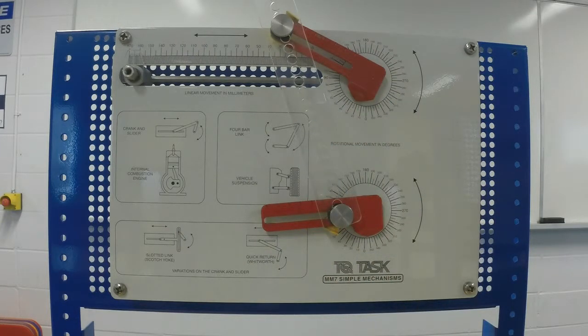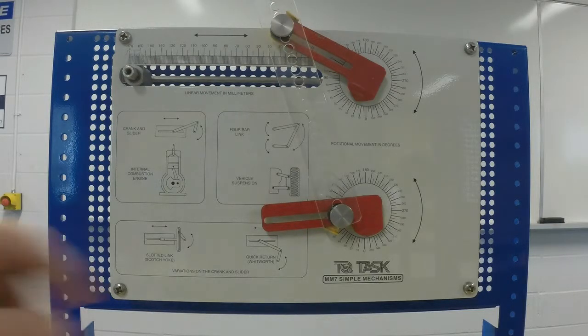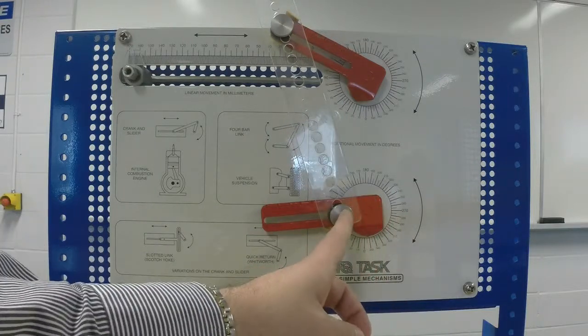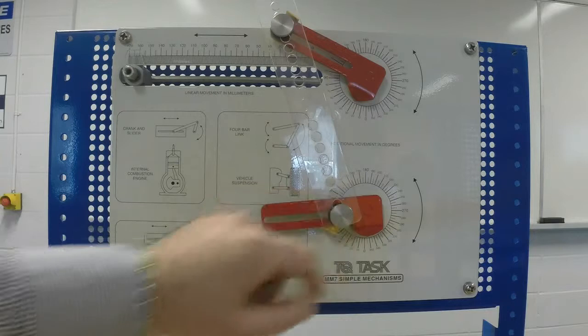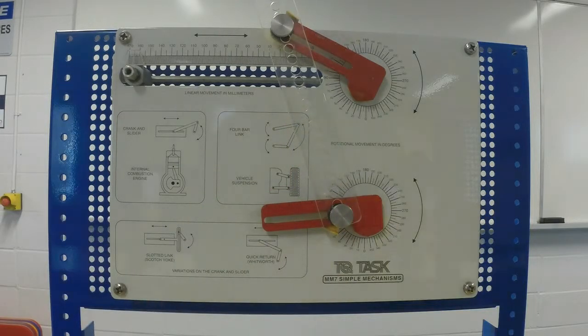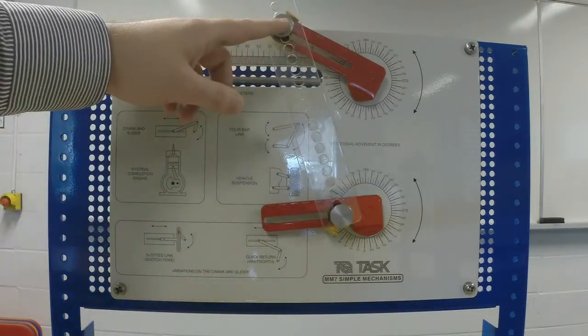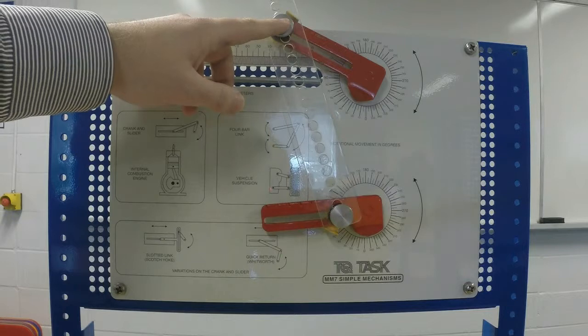The procedure says to assemble the four-bar link with an input crank length of 20 millimeters. From zero to the first one is 20 millimeters. The connecting rod or coupler is 170 millimeters—from the first center to center, this one is 170 millimeters.